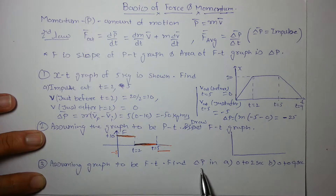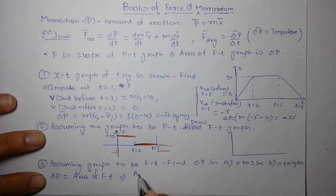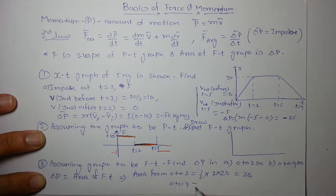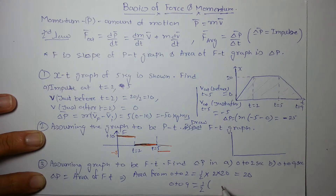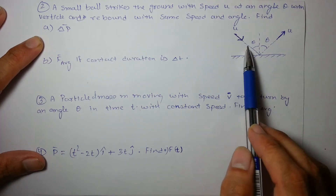Assuming the graph is an F-t graph, we find change in momentum from the area. Area from 0 to 2 is (1/2) × base × height = (1/2) × 2 × 20 = 20. Area from 0 to 9 is the area of a trapezium: (1/2) × (sum of parallel sides) × height = (1/2) × (9 + 3) × 20 = 120.